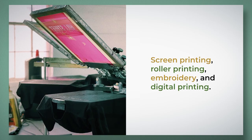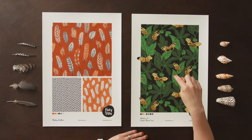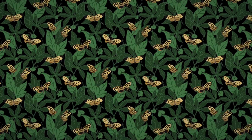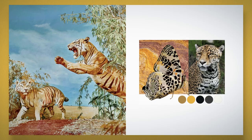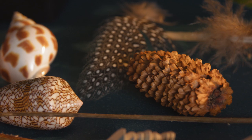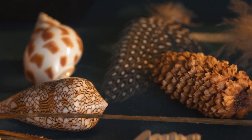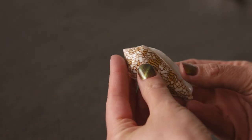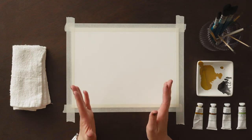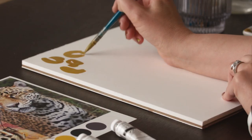First, I'll introduce you to surface design, printing methods, and types of patterns we see in nature. We'll also make an inspiration board. Next, we'll experiment with mark making using some unconventional objects. After selecting the colors and scale, we'll paint our motifs.